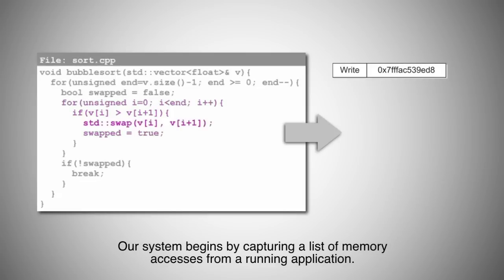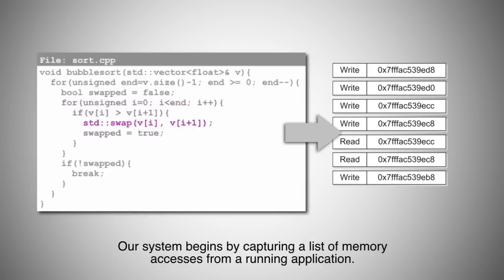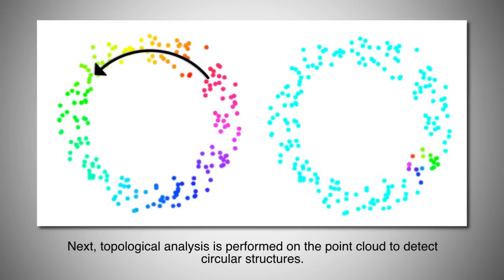Our system begins by capturing a list of memory accesses from a running application. The memory trace records are then converted to a high-dimensional point cloud by combining neighboring references using a sliding window. Next, topological analysis is performed on the point cloud to detect circular structures.